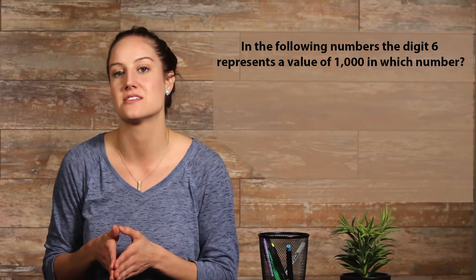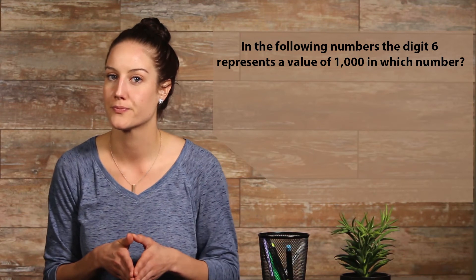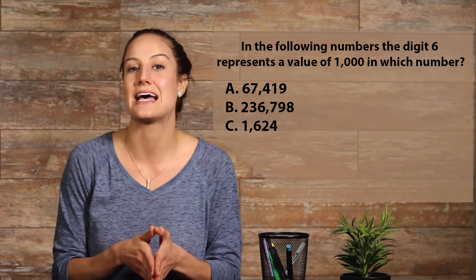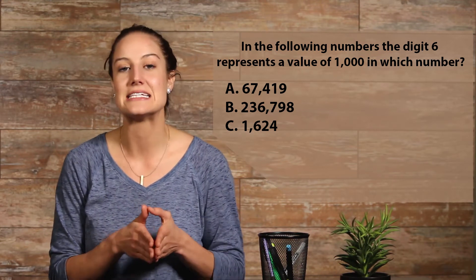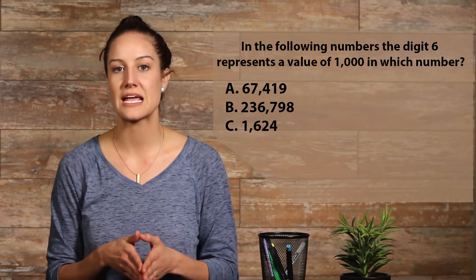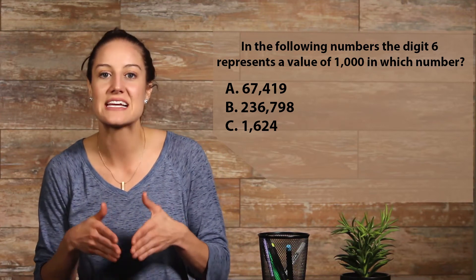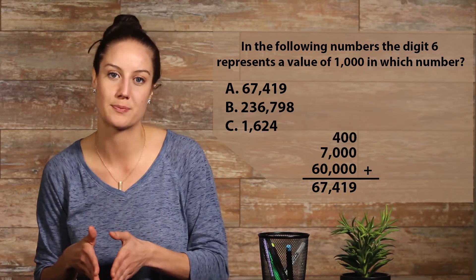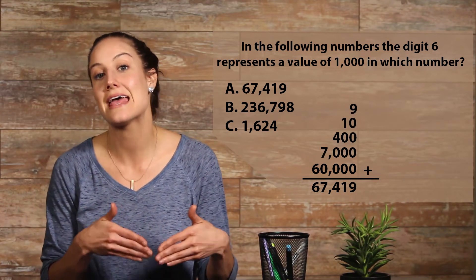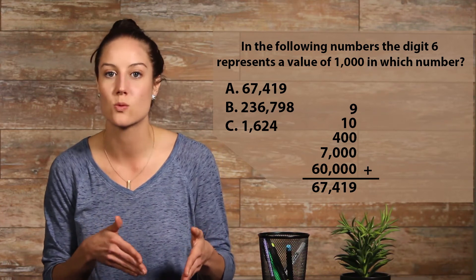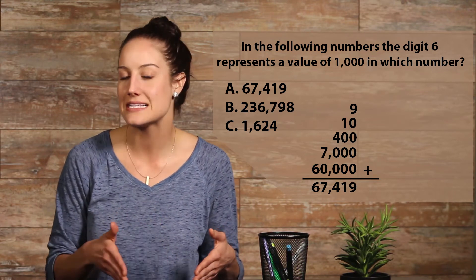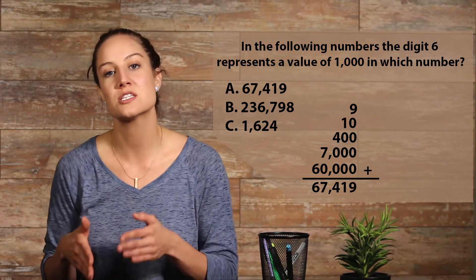Now try one on your own. In the following numbers, the digit 6 represents a value of 1000 in which number? A) 67,419, B) 236,798, C) 1624. Let's start with A. I'm going to expand it so we can see it more clearly: 60,000 plus 7,000 plus 400 plus 10 plus 9, or 6 ten-thousands, seven thousands, four hundreds, one ten, and nine ones. We can see that in choice A, there is a 7 in the thousands place.